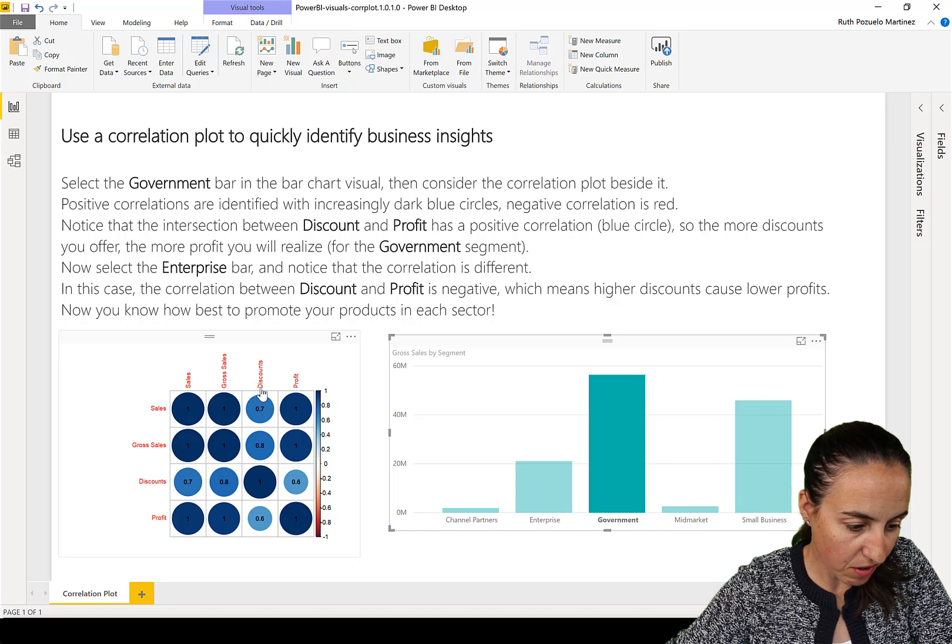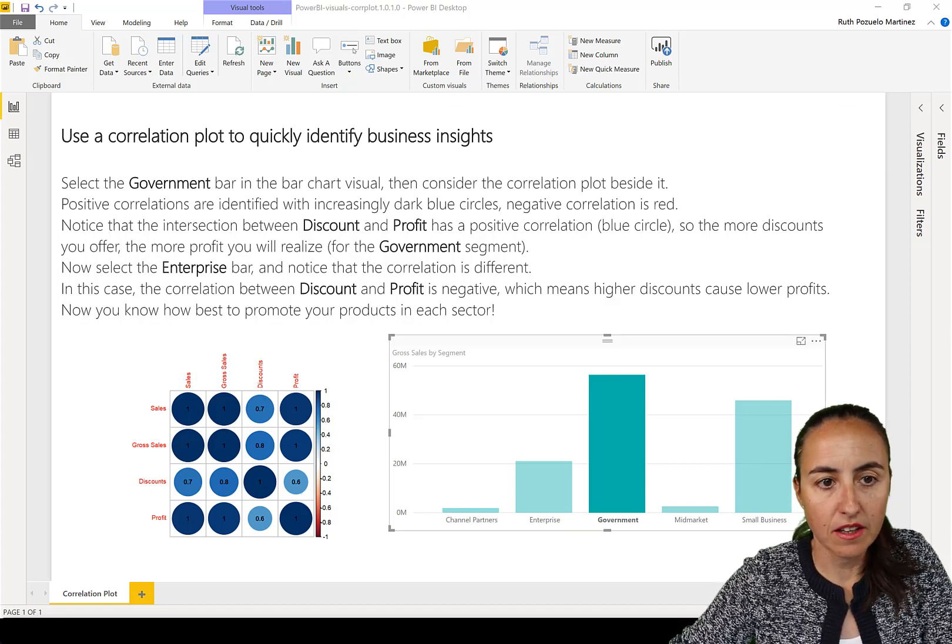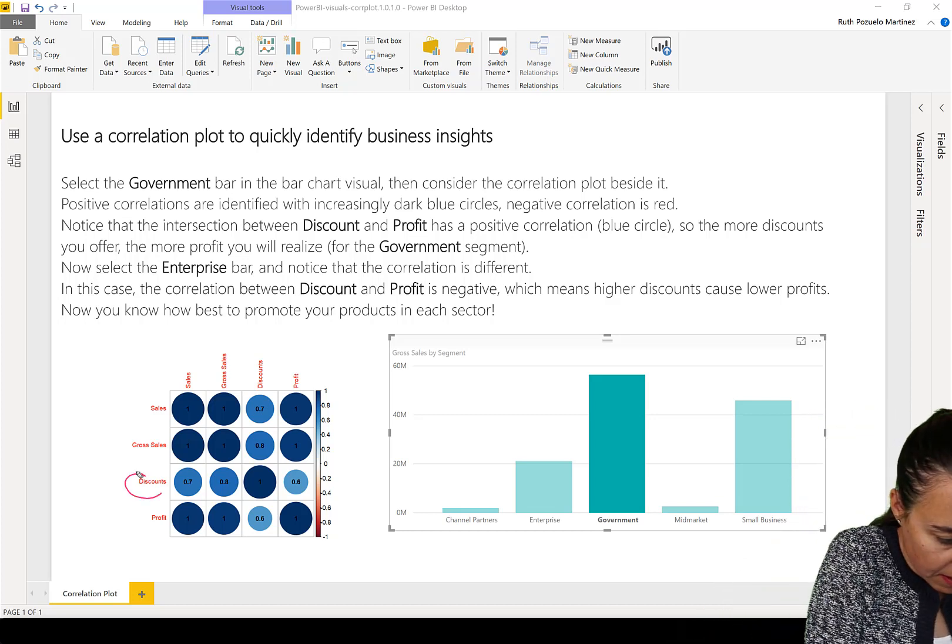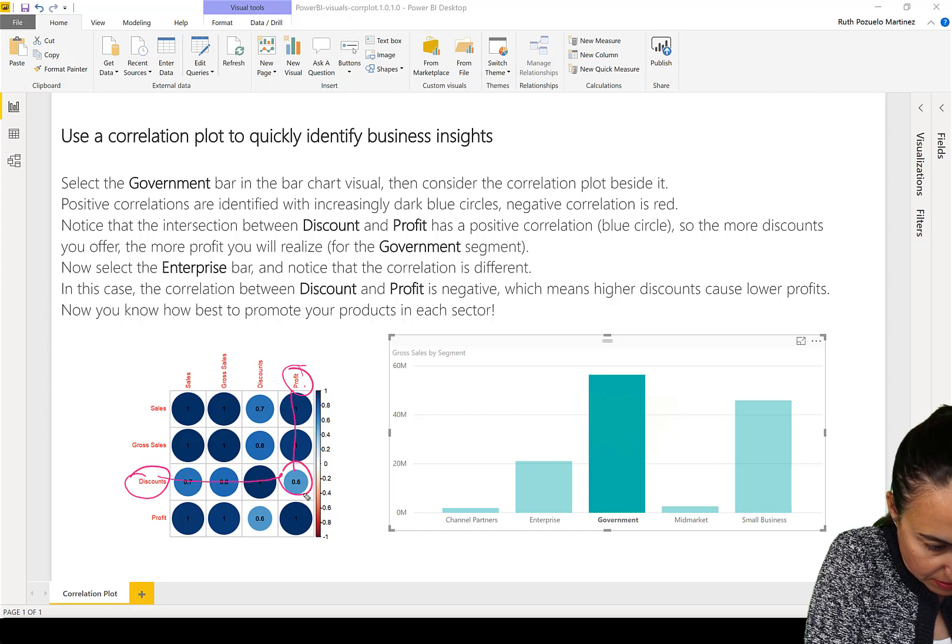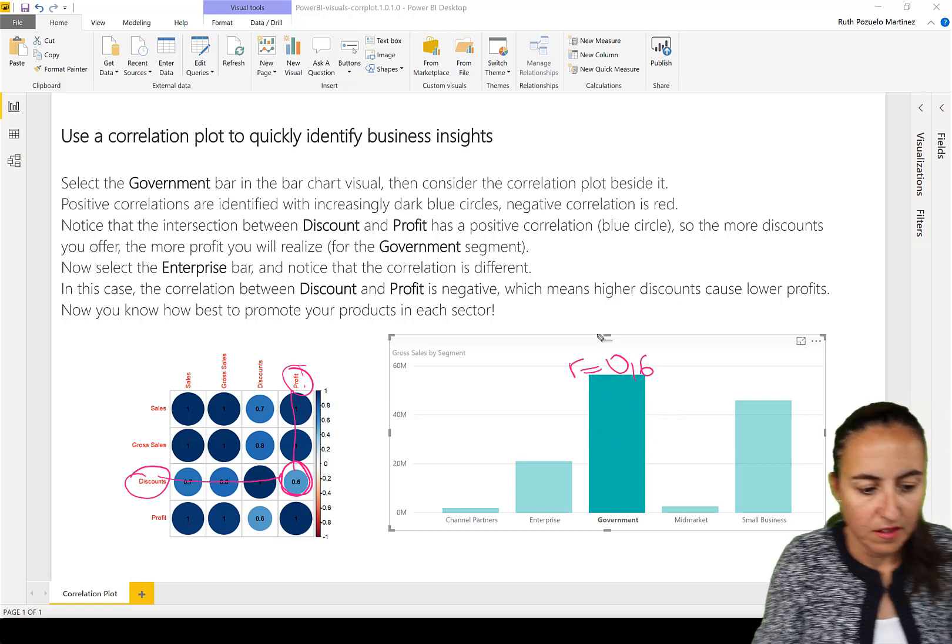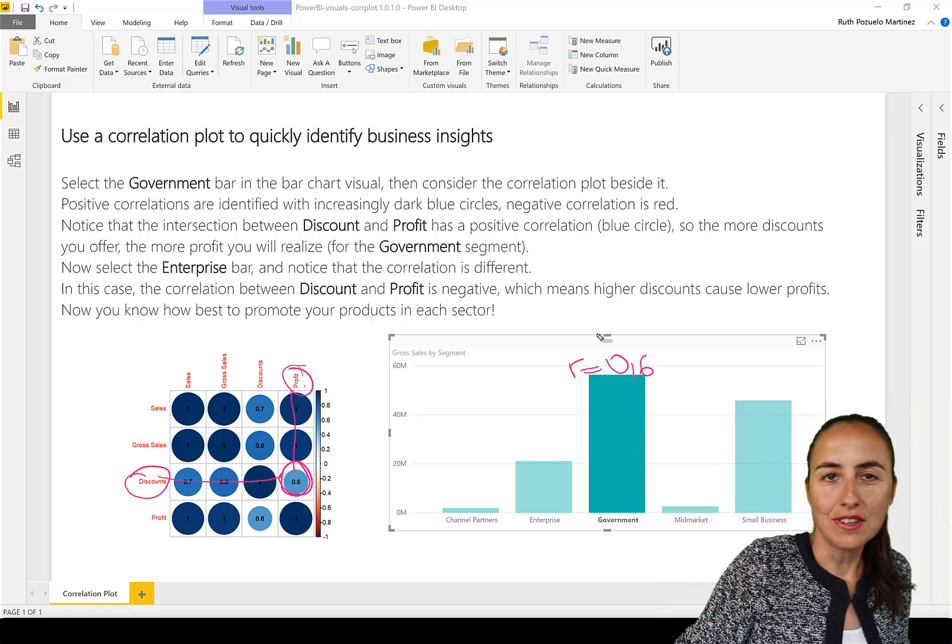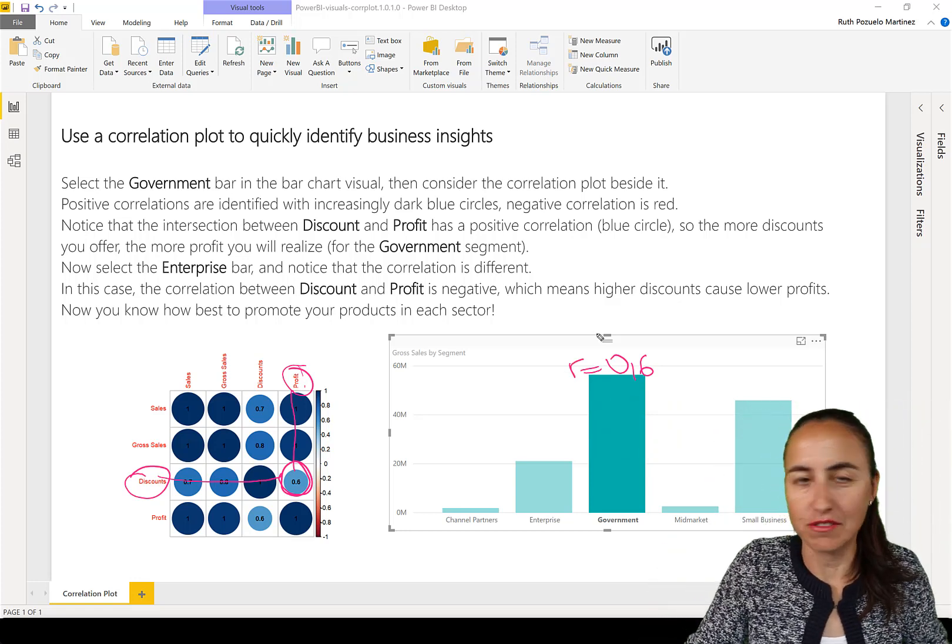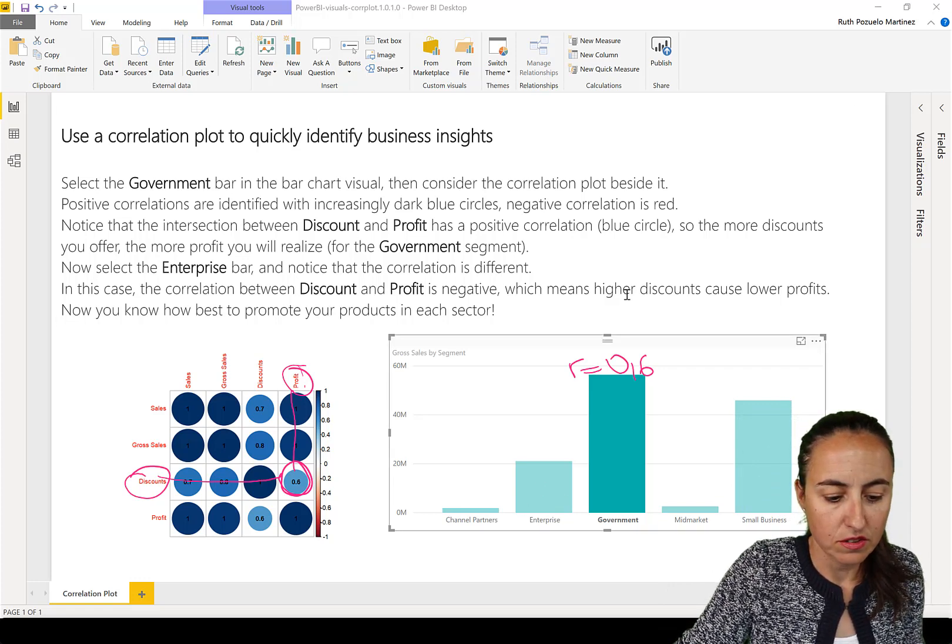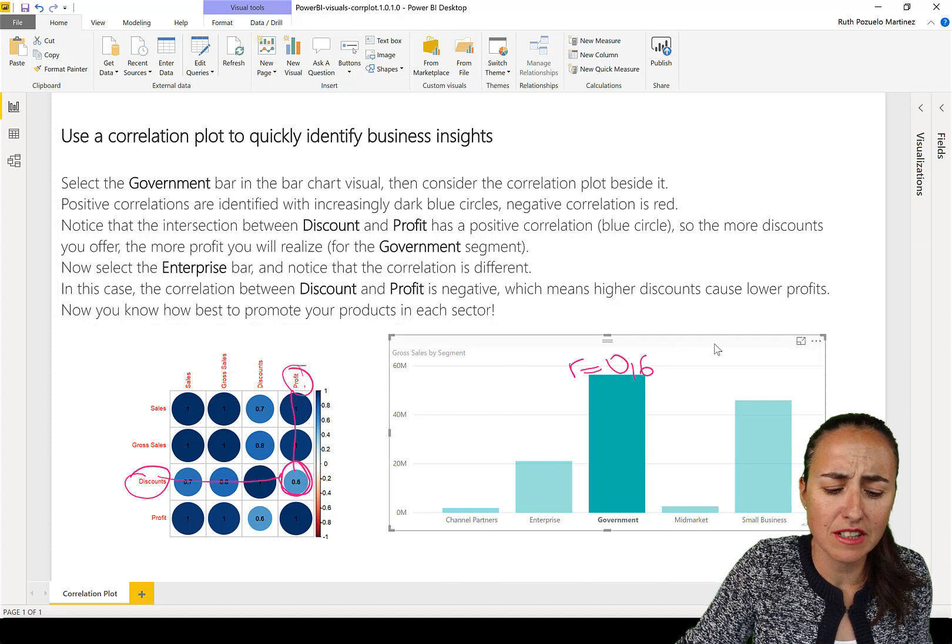Look at discount and profit. So discount, look at discount and profit for government. It is in there. So it is 0.6 R. So given discounts, you get more profit. Awesome. And then it says, well, now I thought it was actually going through, like, is it really true? You know, discounts are often not a good thing, but it says, okay, now go to enterprise and look at the correlation.